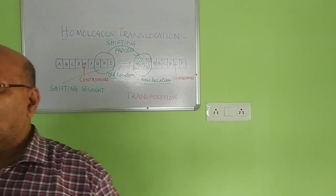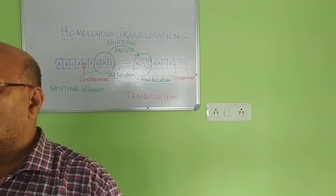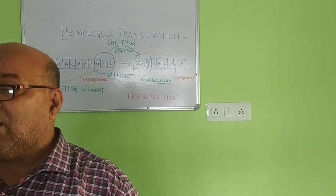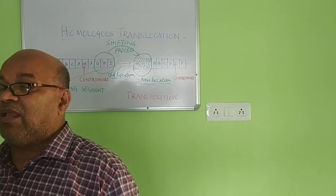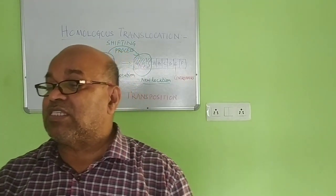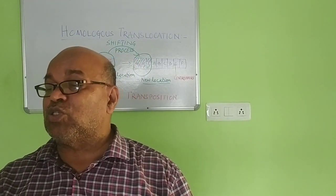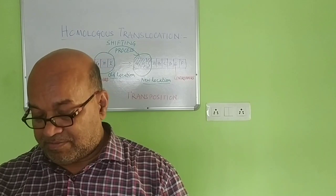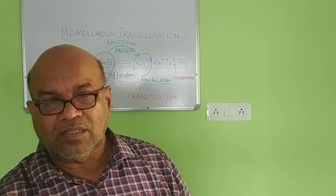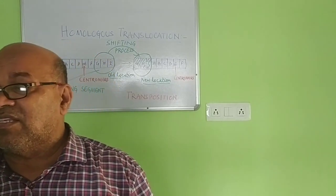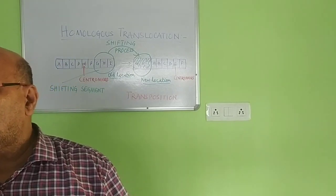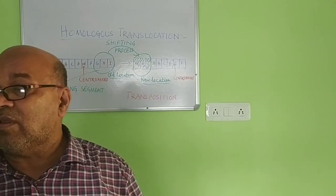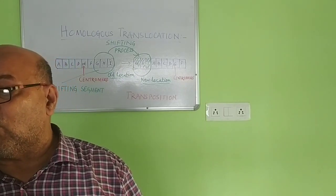To summarize: homologous translocation is the shifting of a chromosome segment to a new location within the same chromosome. This is also called transposition.